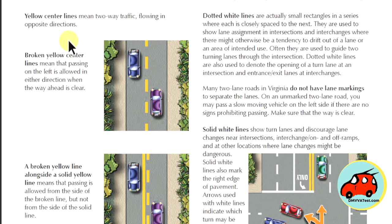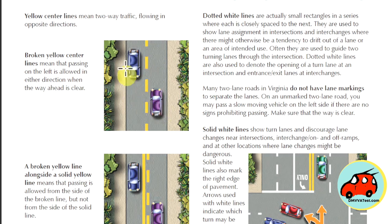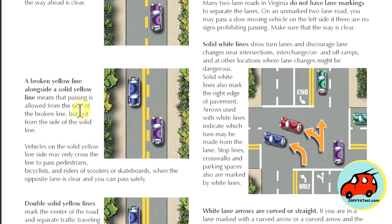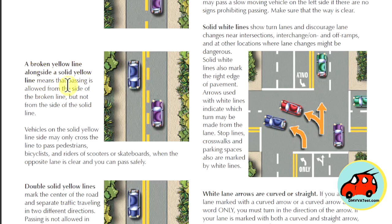A yellow center line means two-way traffic is flowing in opposite directions. A broken yellow center line means passing on the left is allowed in either direction as long as the way is clear. A broken yellow line alongside a solid yellow line means passing is allowed from the side with the broken line. Vehicles on the solid yellow line side may only cross the line to pass pedestrians, bicyclists, riders on scooters, or skateboards when the opposite lane is clear and it's safe to pass.